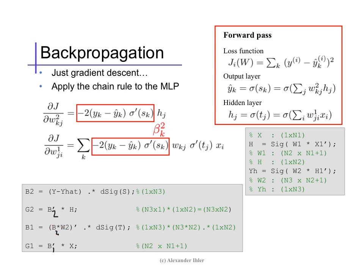We can use the betas at layer 2 to also compute the betas at layer 1 as beta2 times weight2, which sums over k (size n3, the output node index), then multiplying by the slope of the activation d-sigma at value t. That gives a vector of length n2, and then an element-wise product by another vector of length n2, so beta is the size of the number of hidden nodes. The gradient of the weights at the earlier layer is then beta1 times the input features x — a matrix of size n2 by (n1 plus 1). The h matrix should also have had the constant feature, so the layer 2 gradient should be n3 by (n2 plus 1).